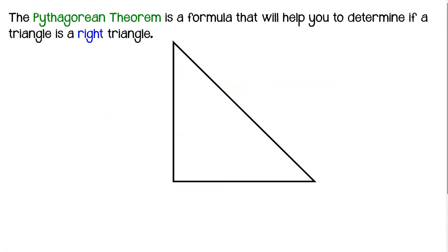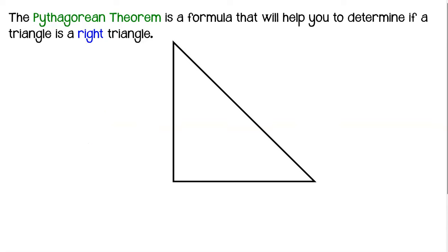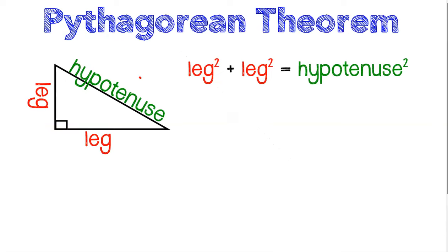Sometimes you will be given a drawing that looks like a right triangle but does not have the 90-degree right angle box. And sometimes you'll just be given three random numbers and asked to determine if they would create a right triangle if drawn. The Pythagorean Theorem can help you decide if something would, in fact, be a right triangle. First, you have to be able to identify the legs and the hypotenuse.